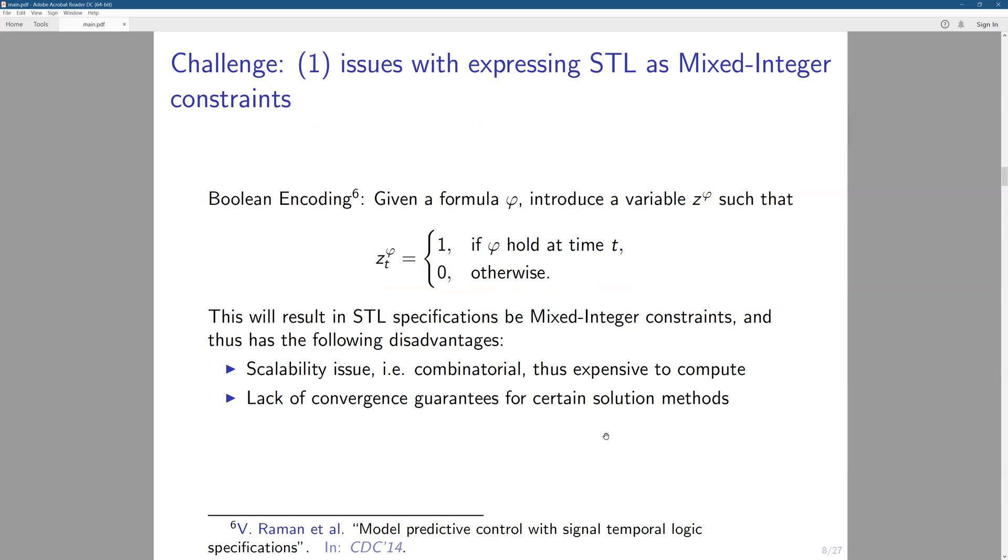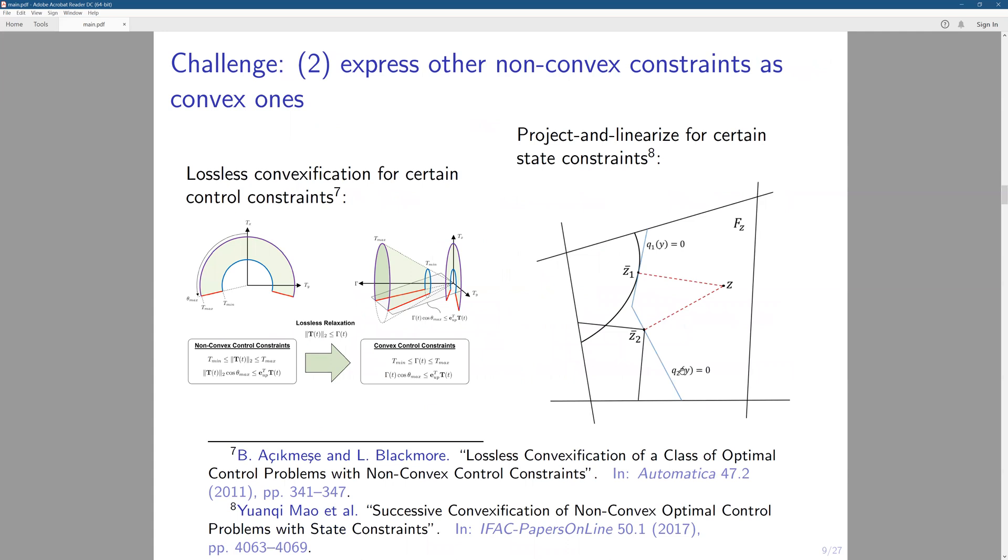So the first one, if you recall that we're using min and max functions for the formulation. And by doing that, we may need to use the boolean coding if we do not do any smoothing. So we may need to use the, so the STL specifications will become mixed integer constraint, which is not that easy to solve. It's quite expensive to compute if we want to solve the mixed integer programming problem. That's the first challenge. The second one is express other non-convex constraints, but this part has been resolved by our previous work. So we can use this technique to do the control constraint convexification. We can also use the project and convexify technique to do the state constraint convexification. So this challenge is done.